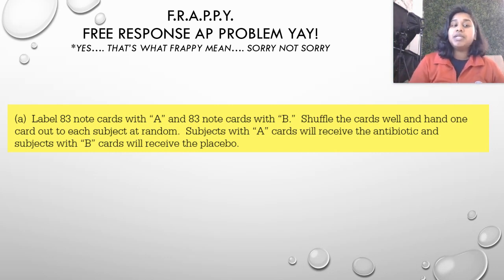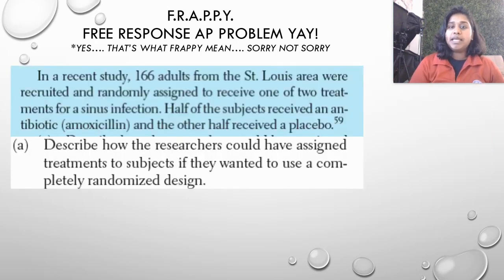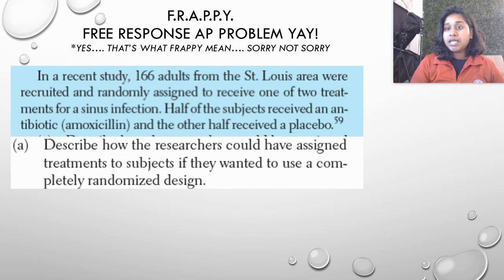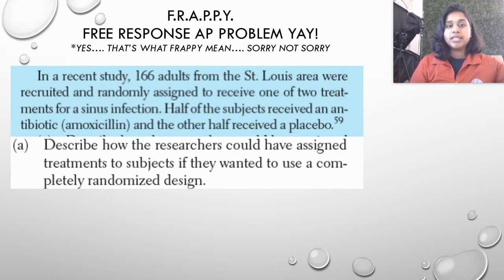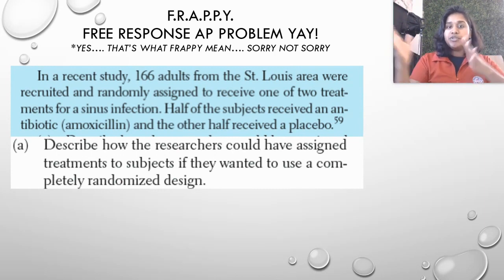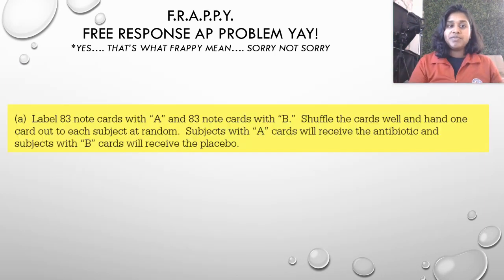We labeled 83 note cards with the letter A and 83 note cards with the letter B. Why 83 and 83? If you take 166 and divide by two, you get 83 and 83. So we've separated our 166 adults into two different groups.